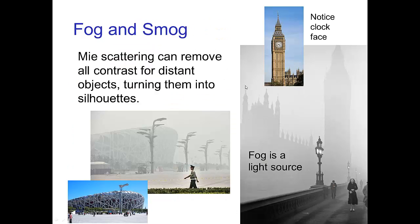You can also see a more pronounced effect when there's fog or smog. Due to these larger particles doing the scattering, things appear white — this is Mie scattering. When we look in the distance, not only do we have a lot of white which desaturates the image, but it also removes contrast. Notice that we don't even see any details of the front of this tower — this is Big Ben. We just see a silhouette, because the fog is actually a very significant light source, both in front of us and behind the tower.